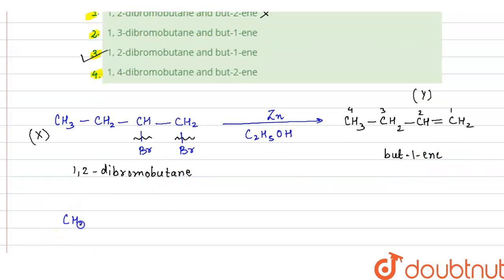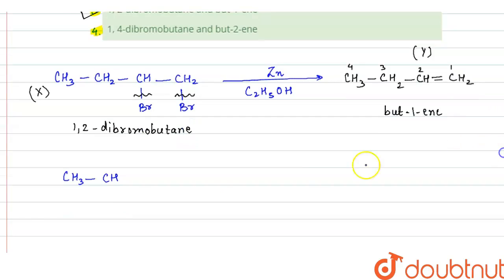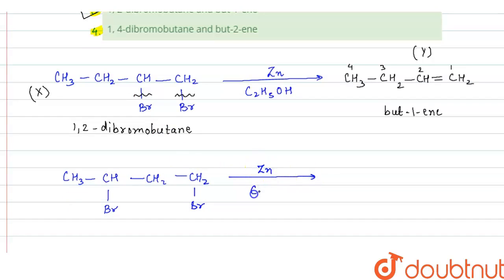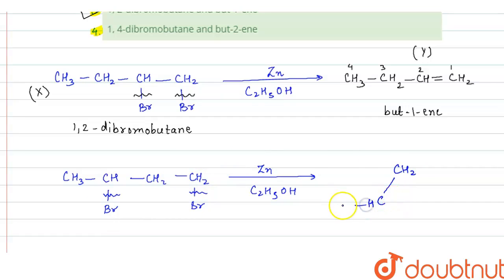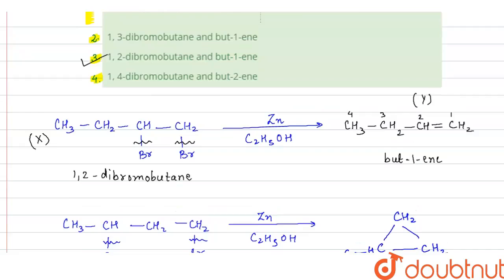Now let us check 1,3-dibromobutane. Its structure is: CH₃-CH(Br)-CH₂-CH₂Br. When treated with zinc in presence of alcohol (C₂H₅OH), a dehalogenation reaction occurs — one bromine leaves from one end and another from the other. Here, ring formation takes place instead of an alkene, giving a cyclic product with CH₂-CH-CH₃ and CH₂ in the ring. So option 2 is also wrong.